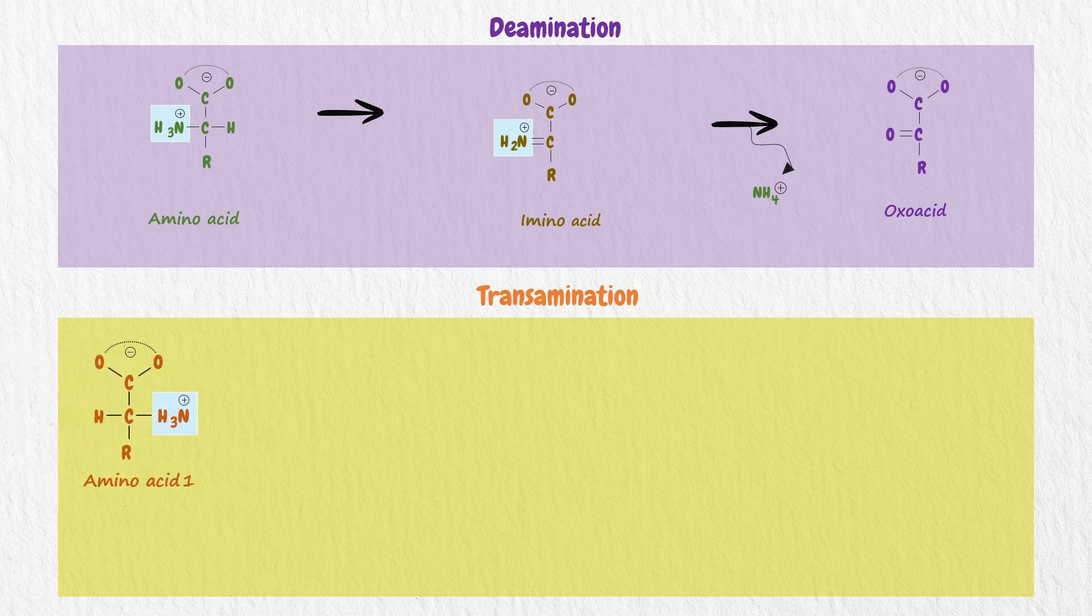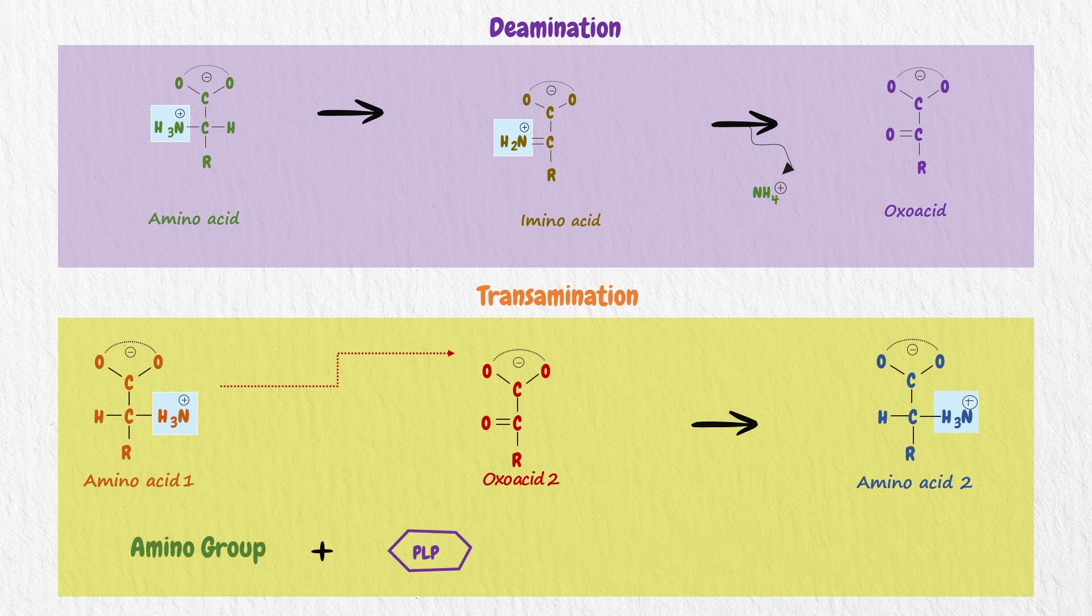This is the structure of amino acid 1, and this is the structure of oxoacid 2. The amino group of amino acid 1 is transferred to oxoacid 2 to form amino acid 2. The amino group is temporarily taken over by enzyme-bound pyridoxal phosphate, which then becomes pyridoxamine phosphate.